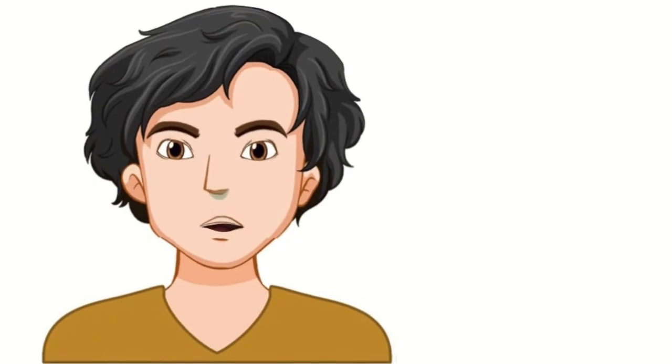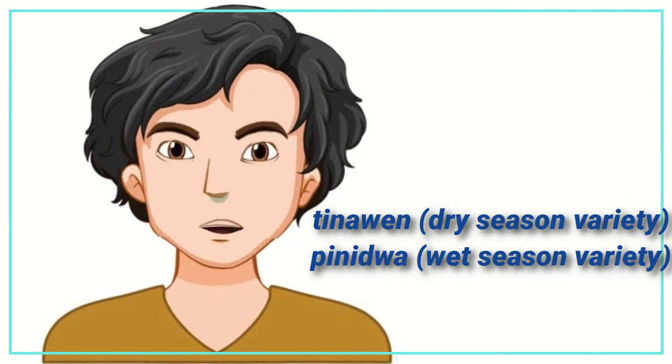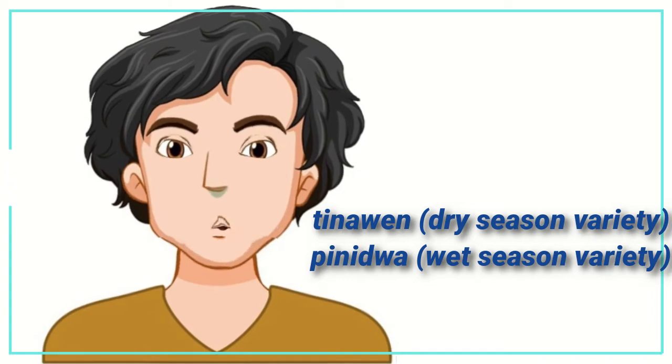Rice varieties planted include Tunaan, a dry season variety, and Pinadouat, wet season variety.